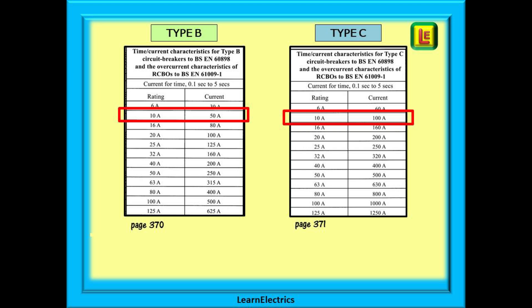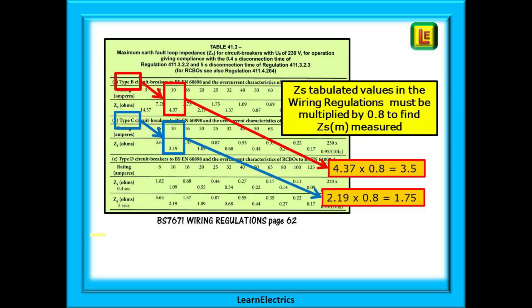Look at the red highlighted boxes. The chart actually tells us that the fault current required for a 10 amp B type is 50 amps and for a 10 amp C type it is 100 amps. If we make some calculations on these numbers we arrive at the maximum permitted ZS for each type and these are shown in our case on page 62 of the wiring regulations. The red boxes show the B type as having a maximum ZS of 4.37 ohms and the blue boxes show the C type has a maximum ZS of 2.19 ohms, half the B type maximum. We've halved the sensitivity so we must halve the ZS and these tables tell us this.